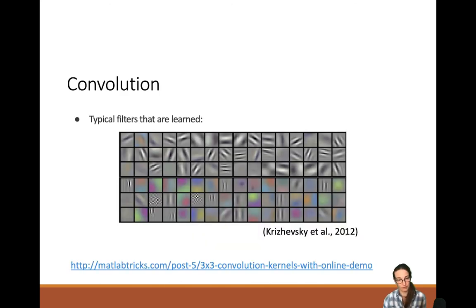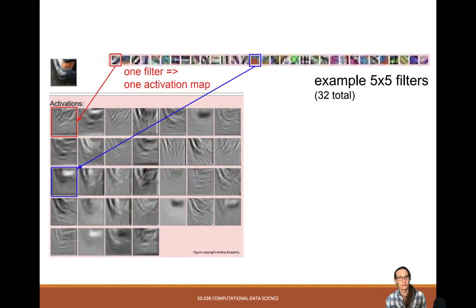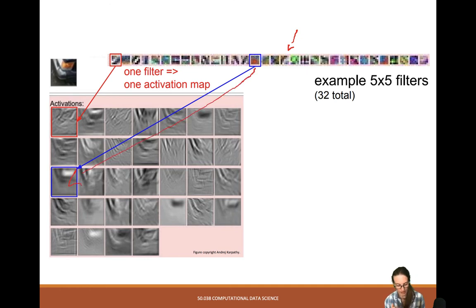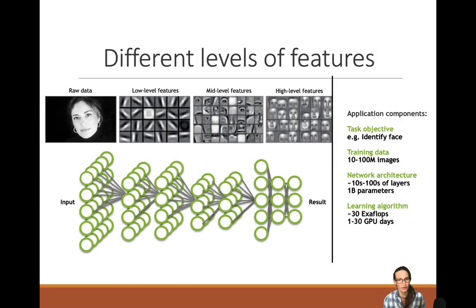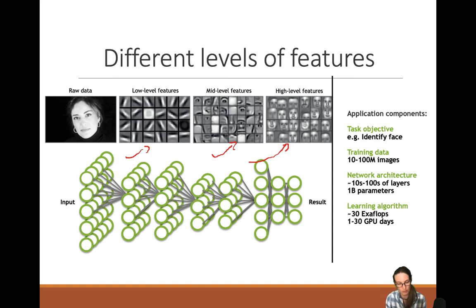Here are some examples of typical filters actually learned by convolutional neural networks — you can see edge detection and changes between specific colors. One filter always results in one activation map. Here are five-by-five filters resulting in feature activation maps. Low-level features are often edge detection. Going deeper, we see actual outlines of eyes, noses, et cetera. If you go really deep into your network, you can find real actual faces and very clear features. This example came from NVIDIA — it was trained for face identification on 10 to 100 million images, with hundreds of layers and 1 billion parameters.